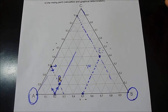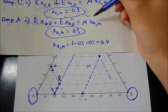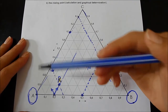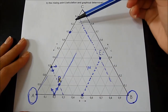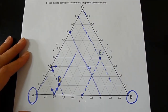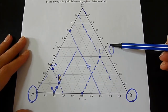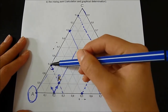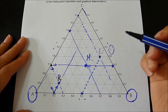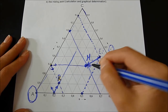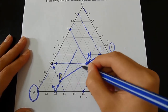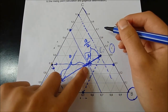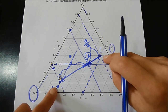Now we plot point M on the ternary diagram. XAM = 0.3, so we locate 0.3 on the A axis and draw a line parallel to the opposite side of angle A. XCM = 0.3, so we locate 0.3 on the C axis and draw a line parallel to the opposite side of angle C. Their intersection gives point M. Measuring the distances confirms that M lies at half the distance between R and E on the diagram, consistent with the 1-to-2 mixing ratio.